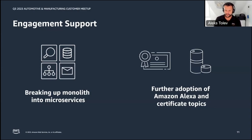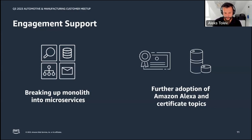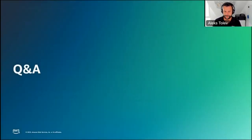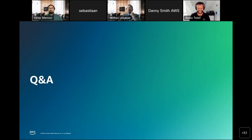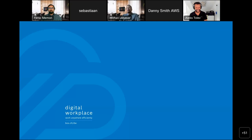That is the way we collaborated — a truly joint collaboration between Bosch Smart Home and AWS based on bidirectional communication. With that, I come to the end of this session, and I believe we have some time for Q&A.